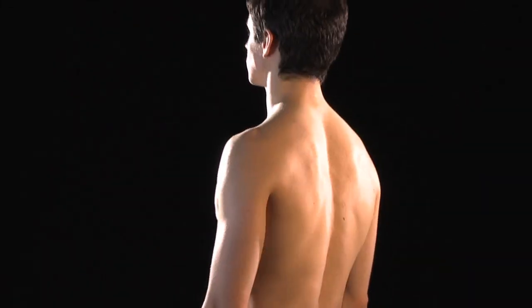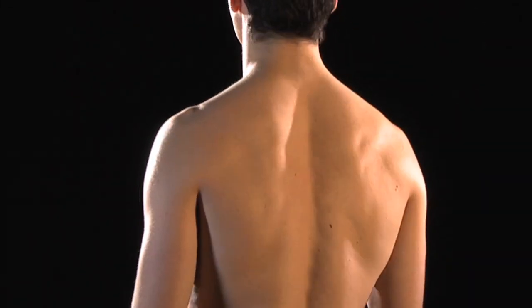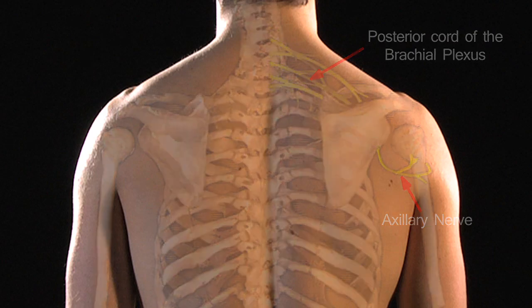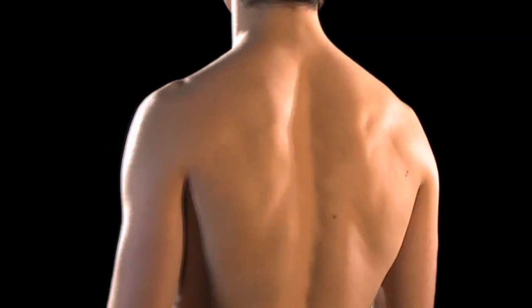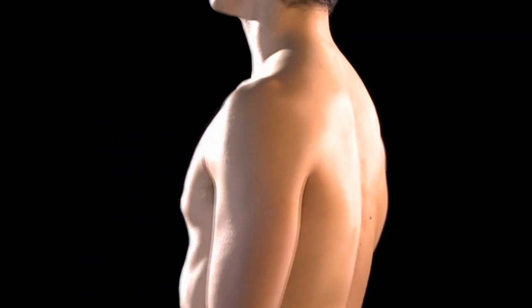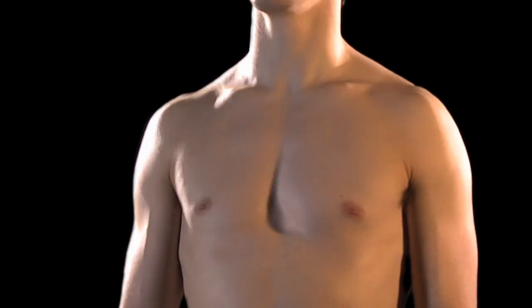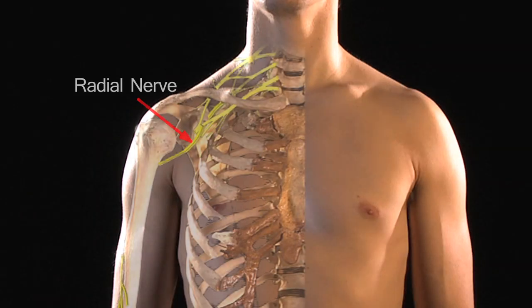The axillary nerve is a branch of the posterior cord of the brachial plexus. You will of course remember that the other major branch of the posterior cord of the brachial plexus is the radial nerve.